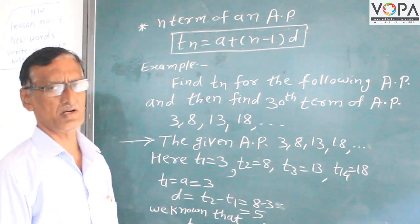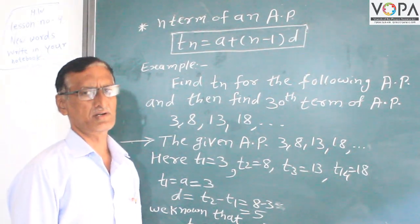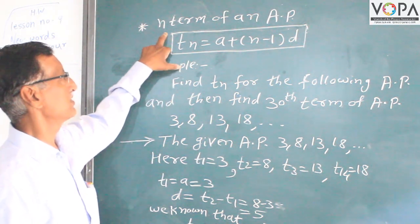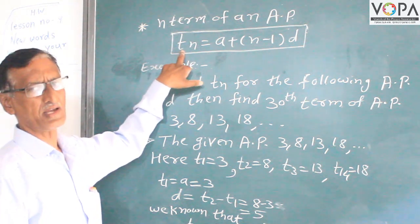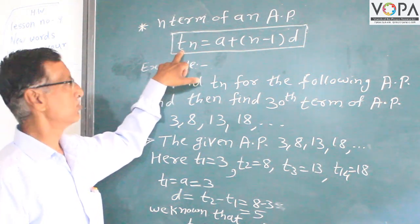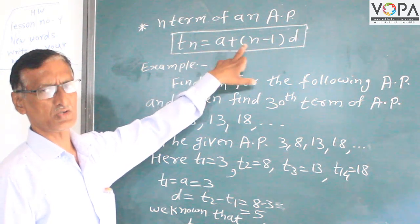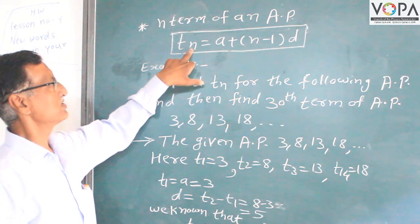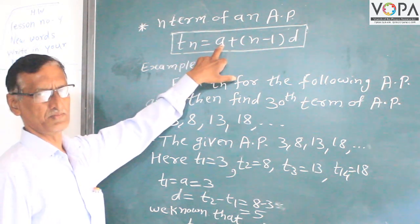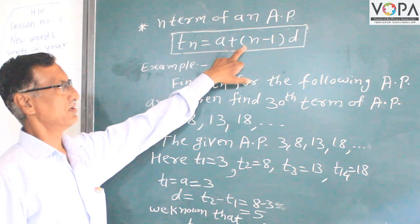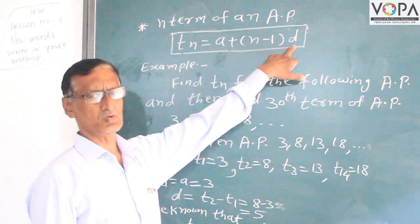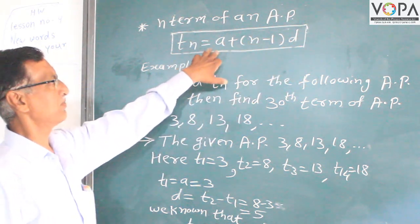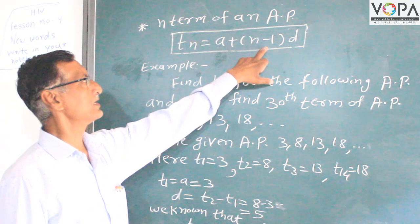You are learning about arithmetic progression. This is the nth term of the AP. The formula is: tn is equal to a plus n minus 1 into d. That is the nth term of the AP. Here, tn is the nth term, a is the first term, n is the number of terms, and d is the common difference between two consecutive terms.